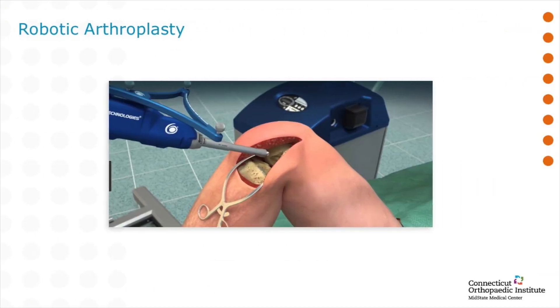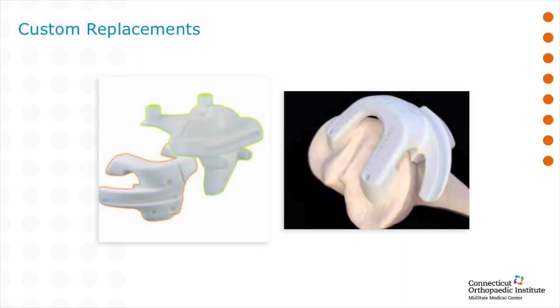One of the most exciting newer advances in joint replacement surgery is robotic surgery. This allows the surgeon to have an additional tool during surgery to help balance and align your knee replacement to its optimal position. Another treatment option, depending upon your individual needs, includes custom replacements — this can be as simple as creating custom guides to help ensure ideal balance and alignment, to custom implants based upon any knee deformity. The science advances are there to help us give you the best possible outcome.